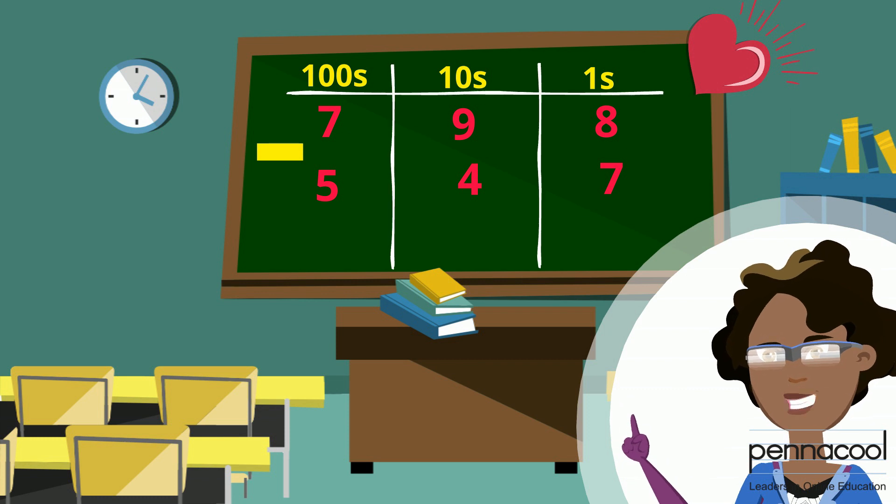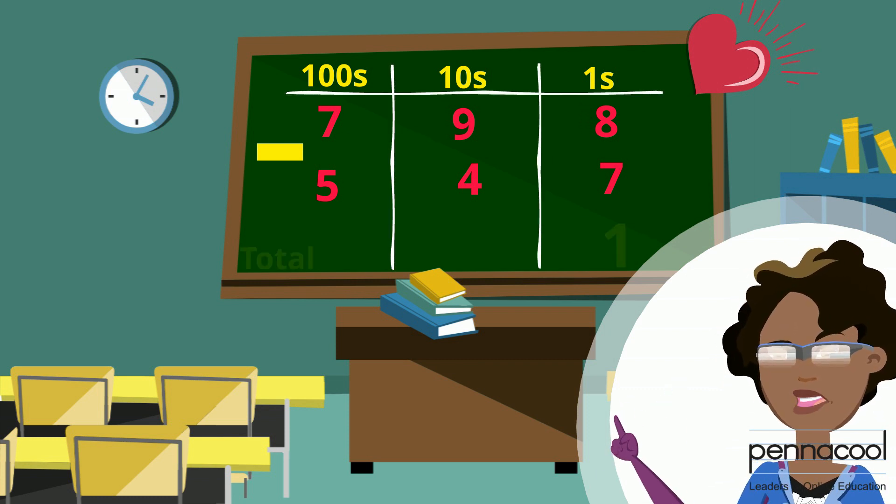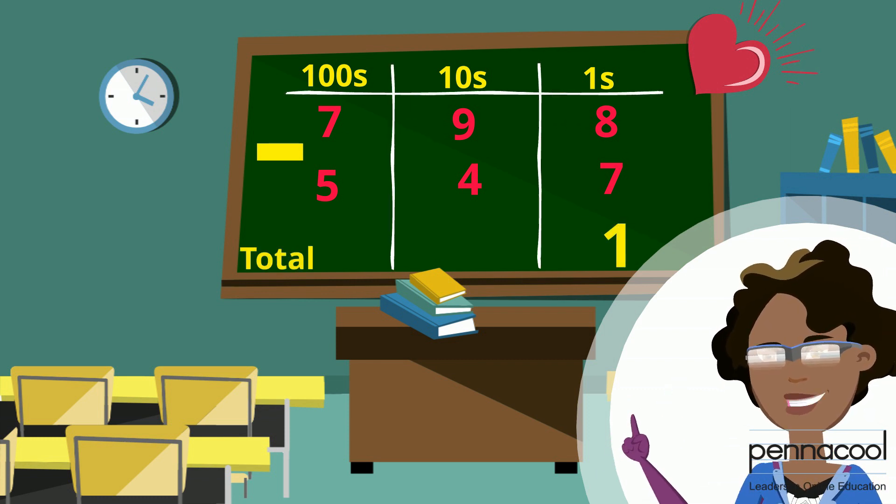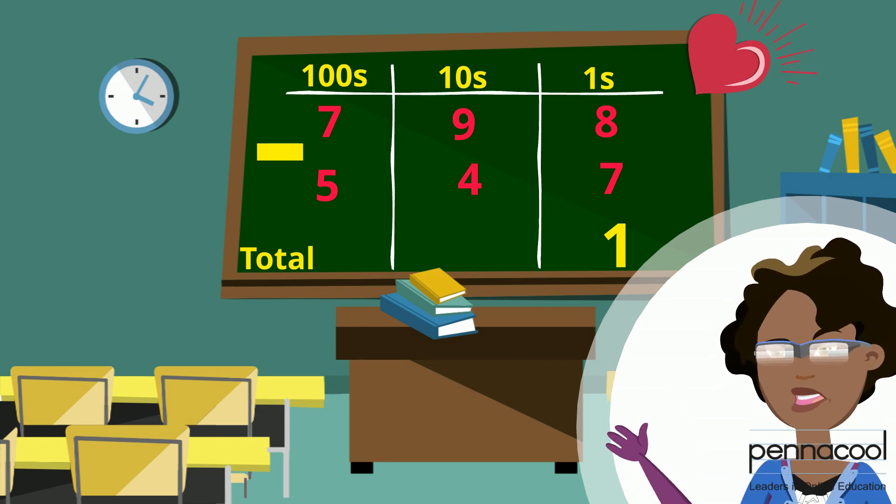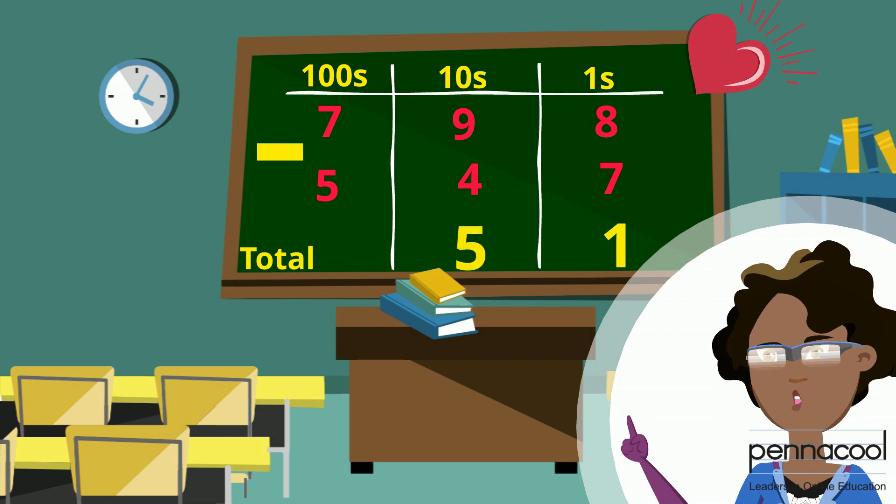8 take away 7 is equal to 1. So 1 goes in the ones column in our total space. Next in our tens column, 9 take away 4 is equal to 5. So 5 goes under the tens column in the total space.